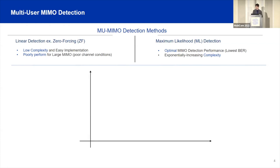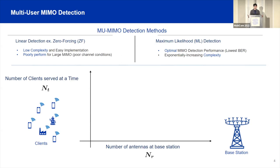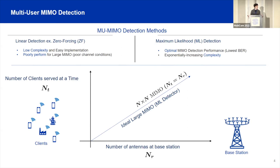Looking at the MIMO regimes: the x-axis is the number of antennas at the base station, which we call NR, and the y-axis is the number of clients being served at a time, which we call NT. Ideally, in an N-by-N MIMO where NT equals NR, we can achieve ideal capacity gains — we call this regime large MIMO. To enable this, we need a very high complexity, near-optimal performance detector. In practice, we operate where NR is well beyond NT, and we call this regime massive MIMO.